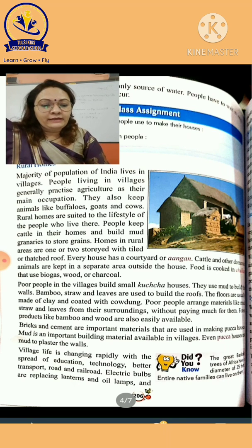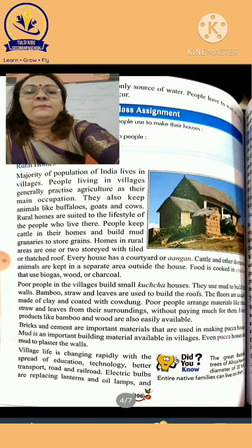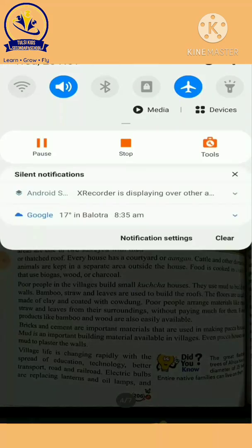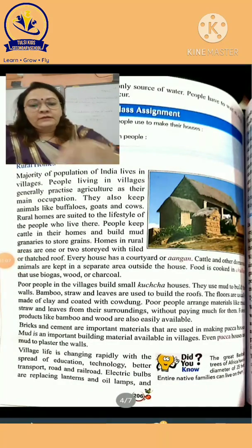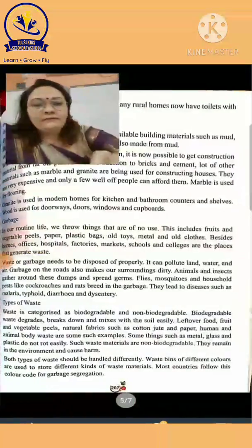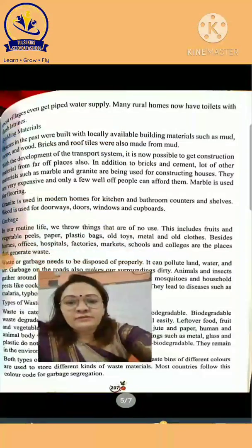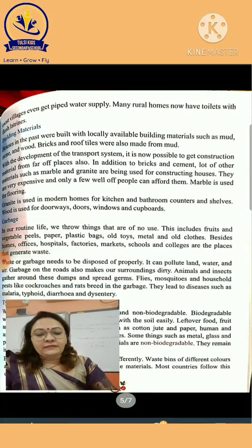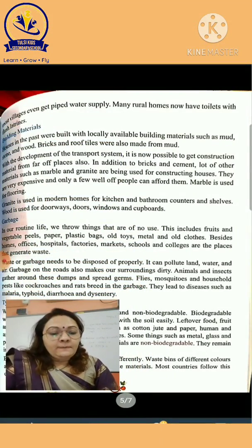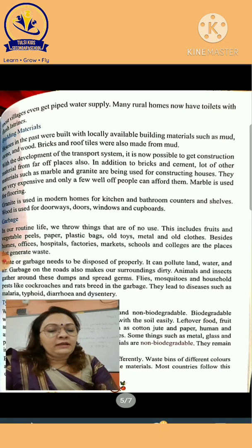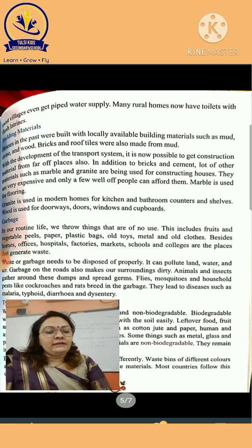Now, page number 207 — just open page number 207. Chapter number one, page number 207. We will see the topic of building material. Houses in the past were built with locally available building materials, such as mud, stone, and wood.